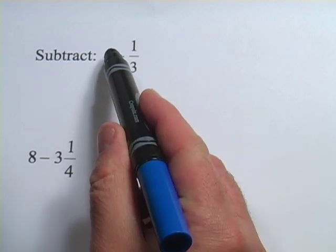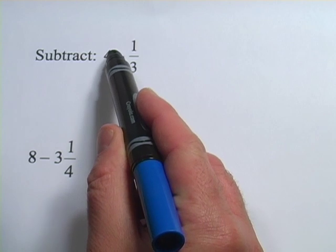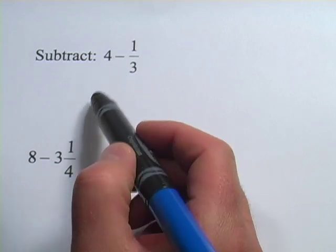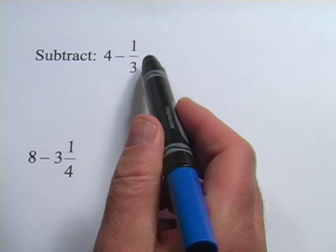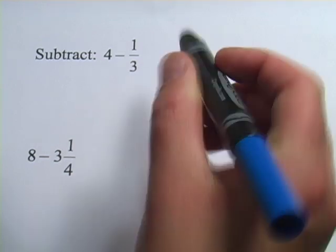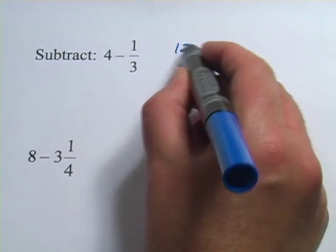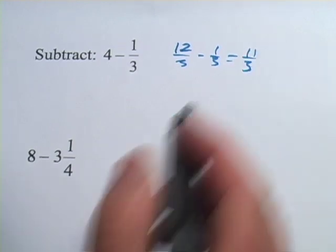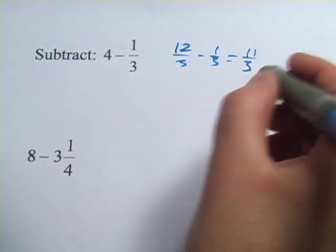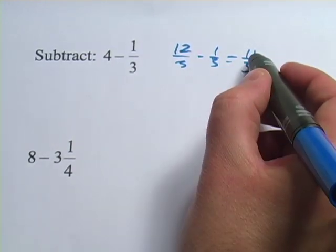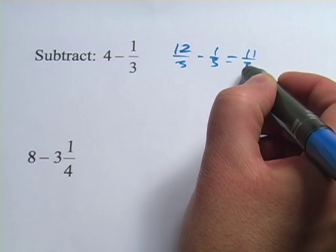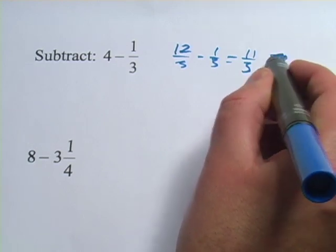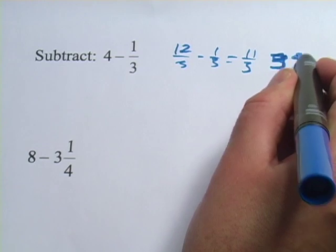I would multiply this by 3 over 3, and I would get 12 thirds there. 12 thirds minus 1 third would be 11 thirds. And then I could convert that back. Let's see how many 3s would go in there — 3 times 3 is 9 — so that would be 3 and 2 thirds.